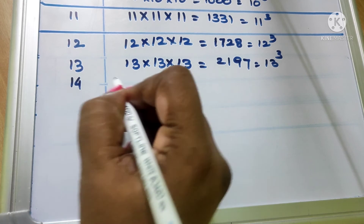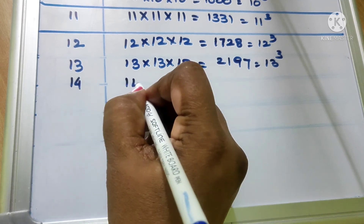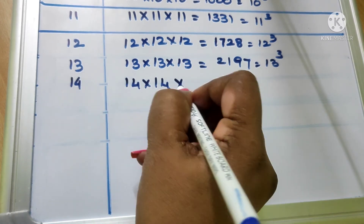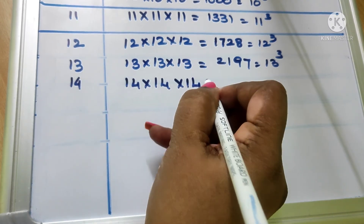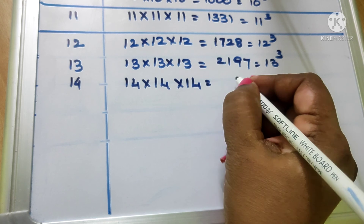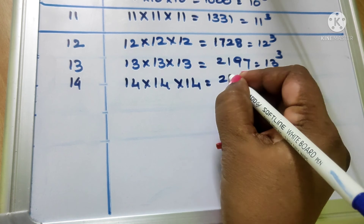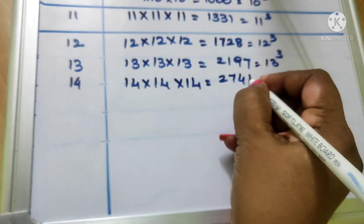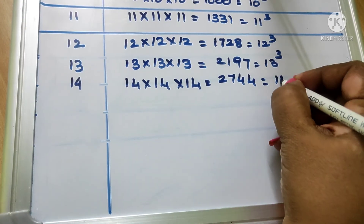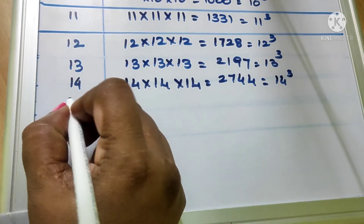14. 14 into 14 into 14 equal to 2744. We write as 14 cube.